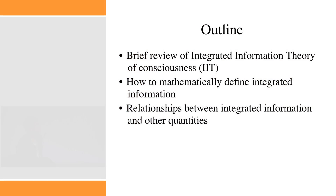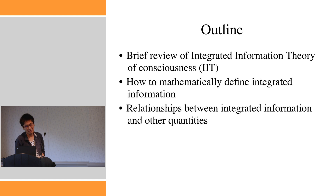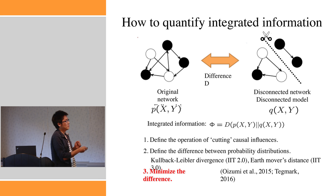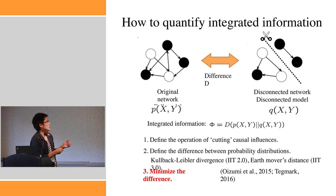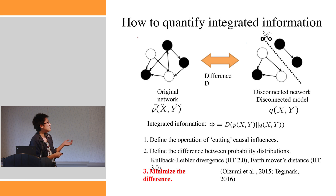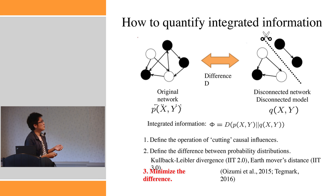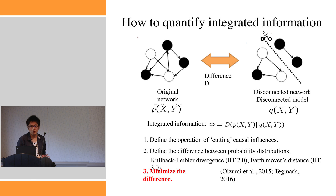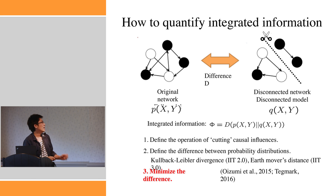Now let's move on to how to mathematically quantify integrated information. The important thing is that we cut the system and compare the original system with the disconnected system. We use the term full model for the original network, described by probability distribution P. The disconnected model is represented by probability distribution Q. We quantify the difference between P and Q, and we say integrated information is just the difference between P and Q. To do this, we need to define the operation of cutting causal inferences between the parts, and how to measure the difference between probability distributions.